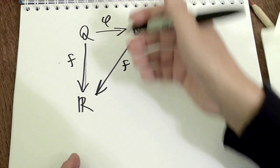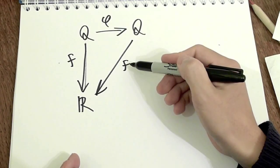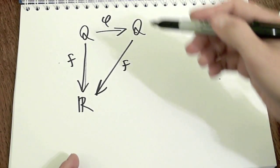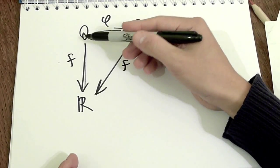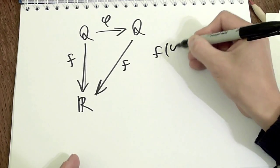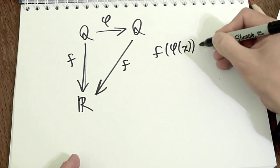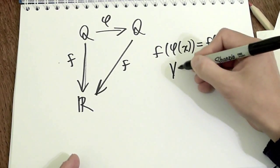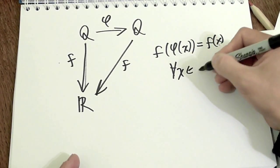To say that this diagram commutes means that if we evaluate f after having mixed things up with this phi, that would have been the same as just evaluating f without mixing things up. This is what it means. It means f composed with phi acting on x is equal to just f acting on x. For all the x in q.